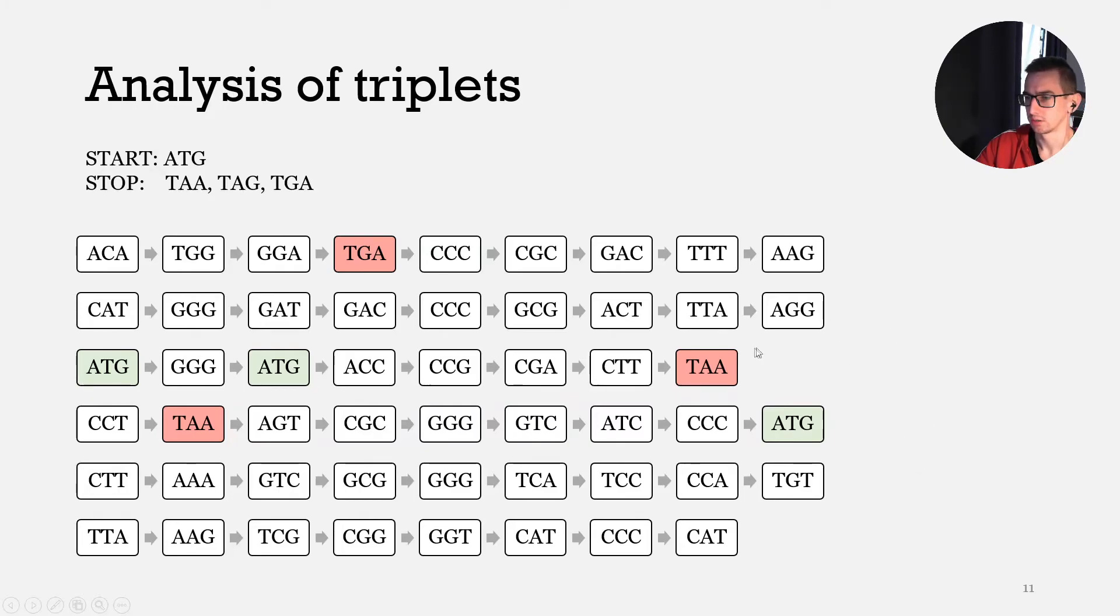We can see that only the third line can contain some information, because here we have a start triplet and stop triplet and some information which is inside of this sequence, inside the start and stop pattern. For example, the first one doesn't have a start codon, this sequence just has a stop codon.